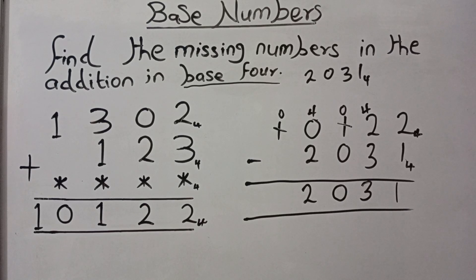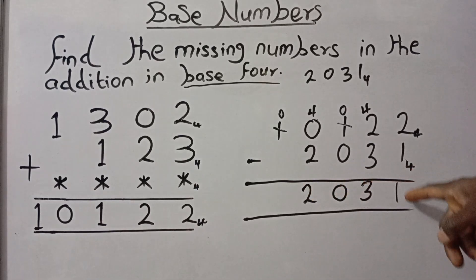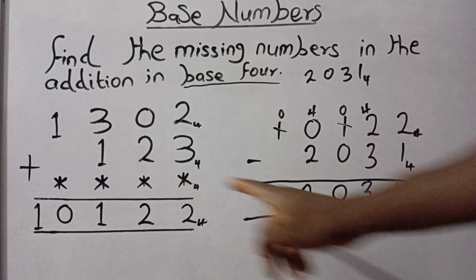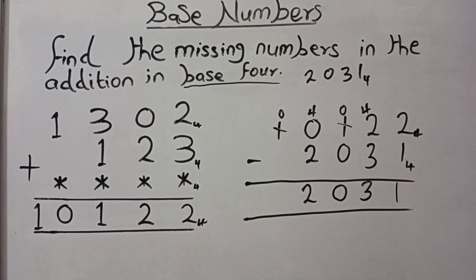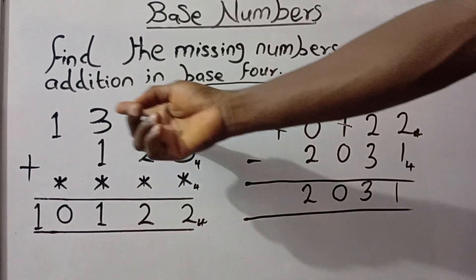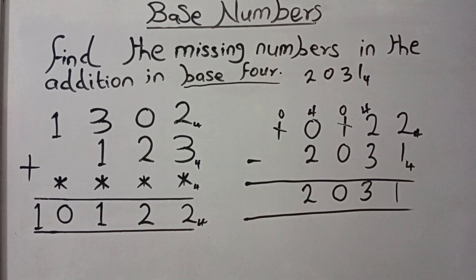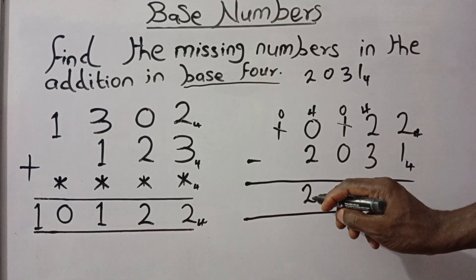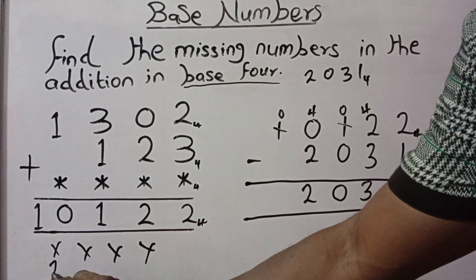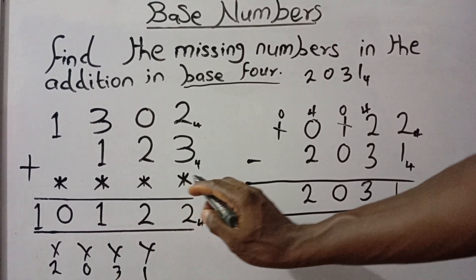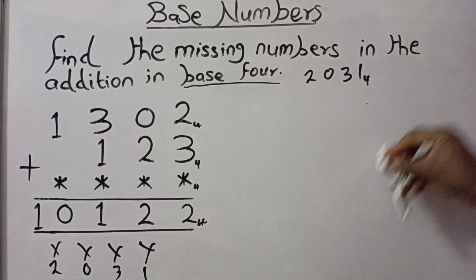The answer is 2031. That means 1 will be in place of the first asterisk, 3 in place of the second, 0 in place of the third, and 2 in place of the fourth. You can see that this is the same as when we subtract the result of the known numbers from the overall answer. So the four asterisks are replaced by 2, 0, 3, 1. Let's now do some checking to verify our answers are correct.